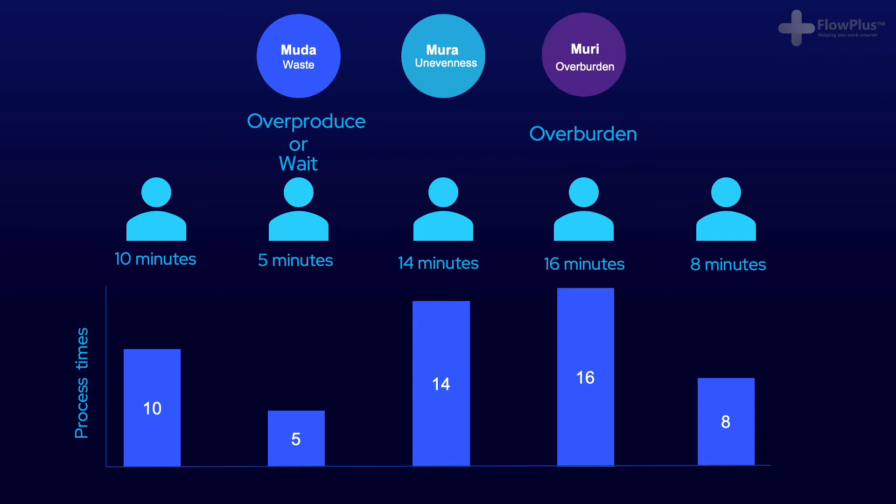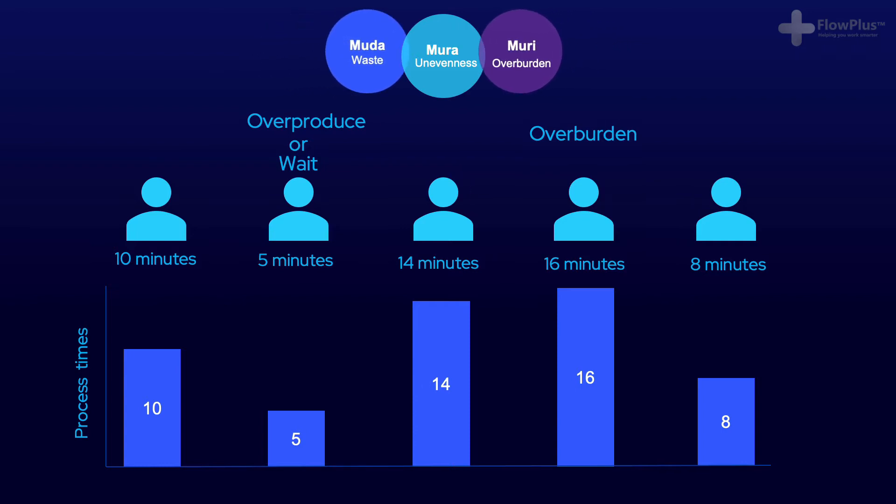These sort of problems exist within all businesses regardless of their nature. What we really want to know is how many operators do we need in an ideal world and what can we do to help balance the line, so balance the work, and remove this variation between operators. Remember the link between muda, moora, and mooree.